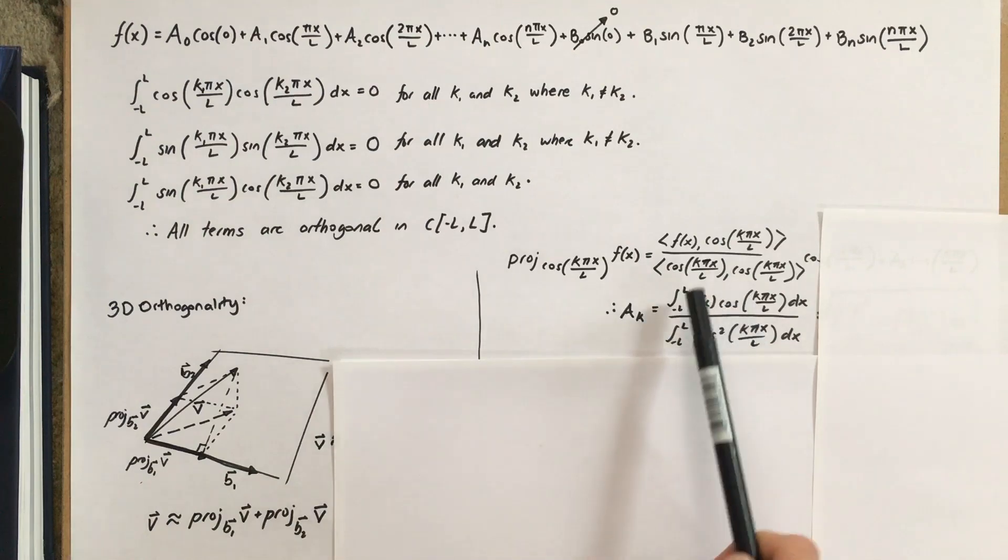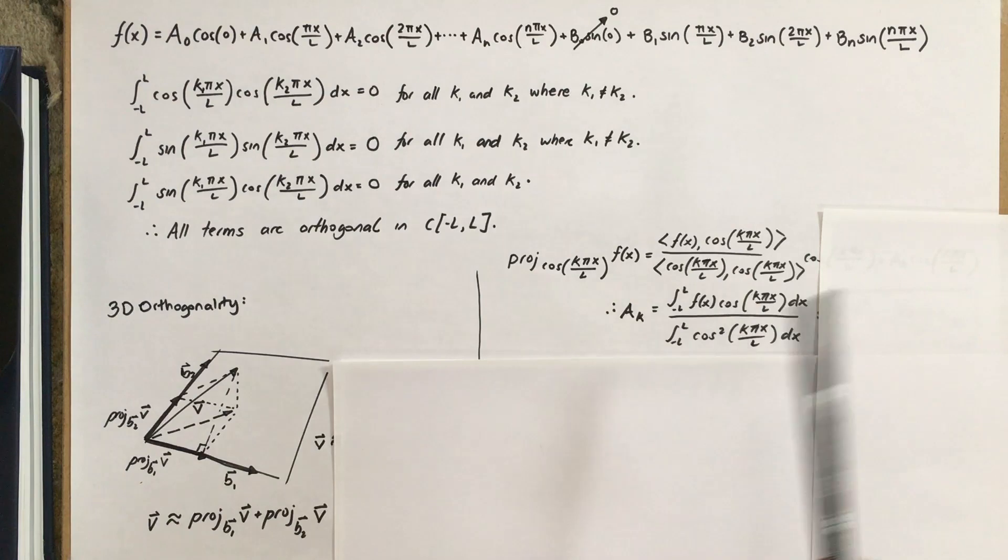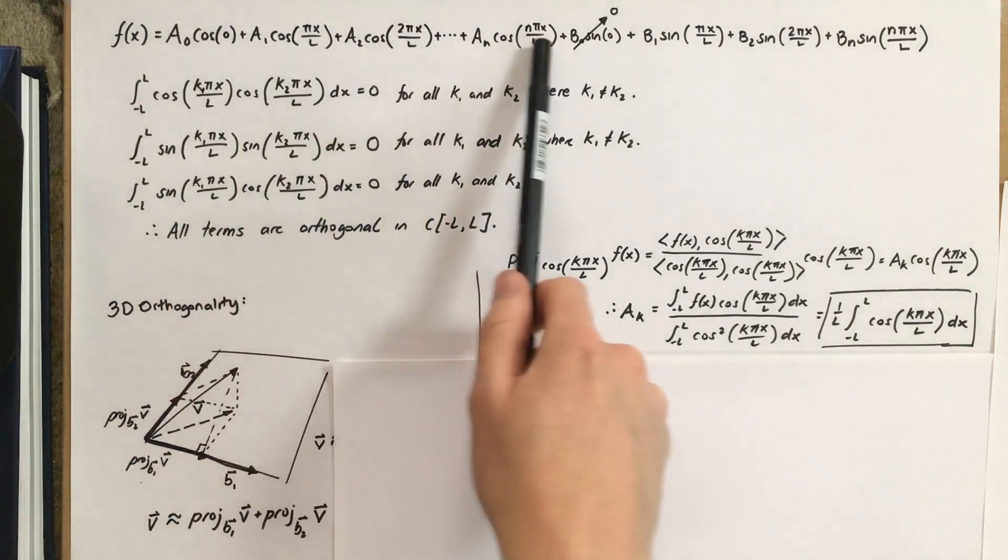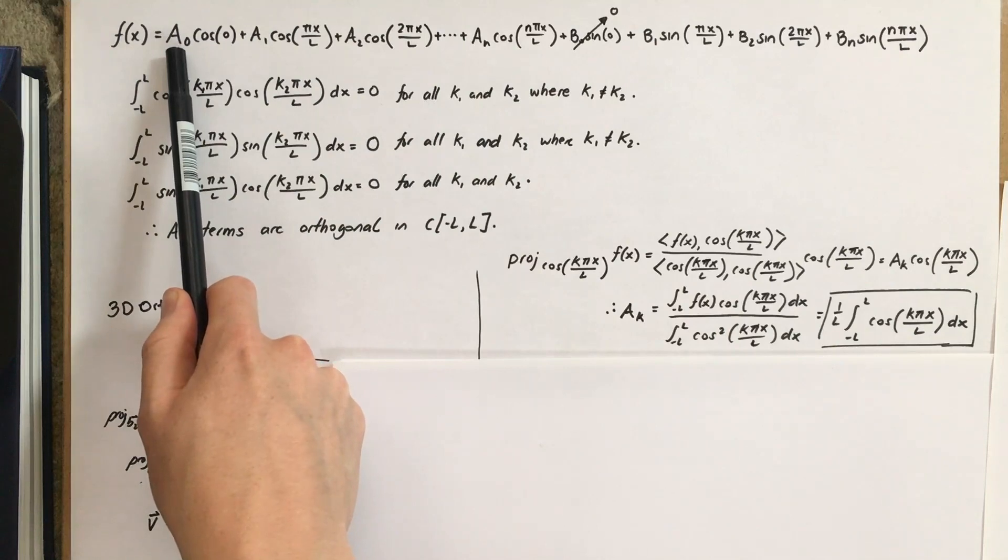So, a k is this inner product over this inner product, and when we do those integrals, we get that. And this is the formula you're going to use to find a sub k for any of these, right? Except a sub 0, which we will see soon.